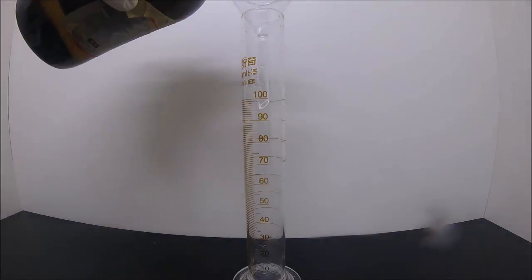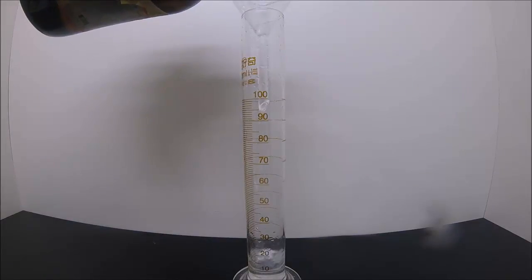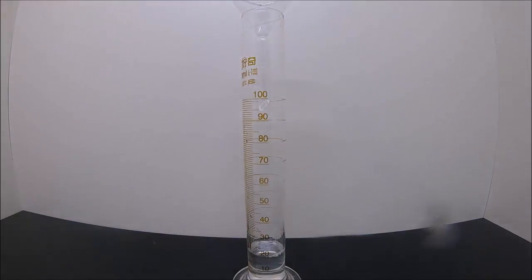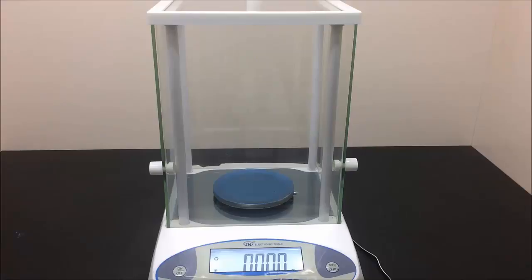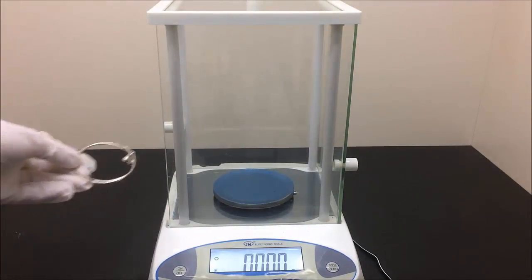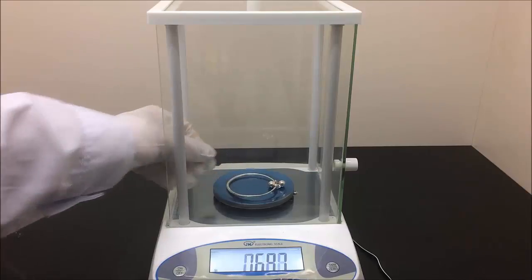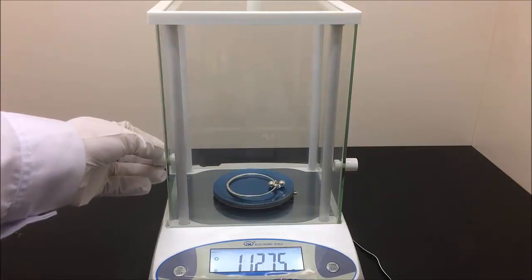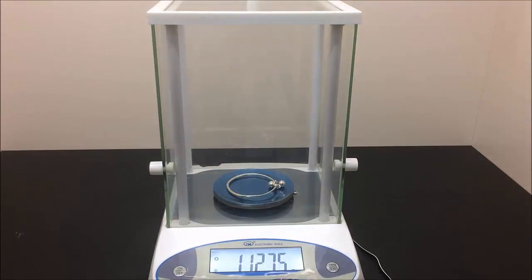First, 20ml of nitric acid is measured using a graduated cylinder. Then I get my digital balance to weigh out the mass of silver, which is about 11.275 grams. This step was done long before I started anything else, which allows me to calculate the amount of acid needed.